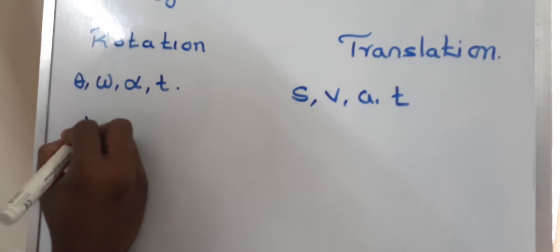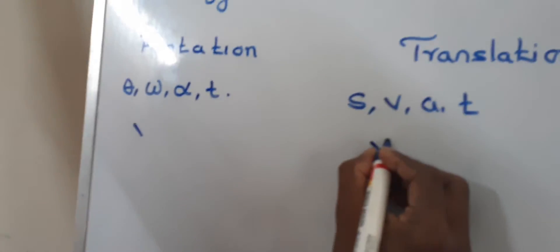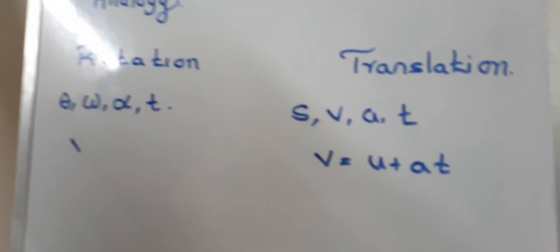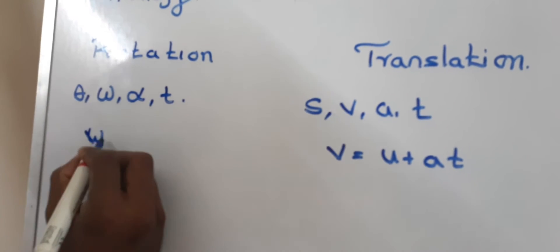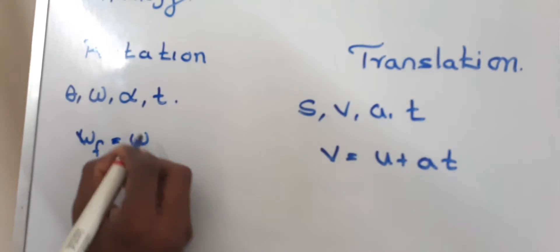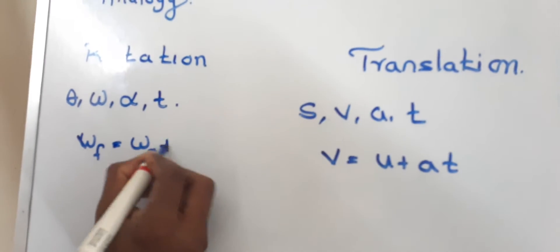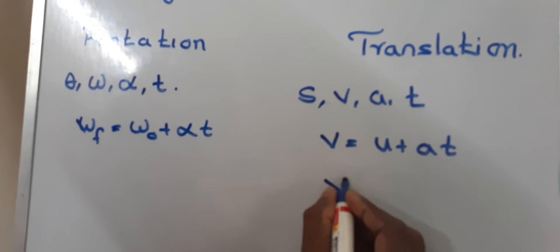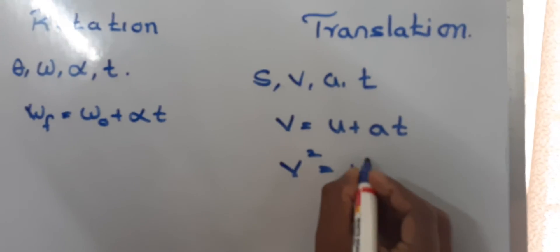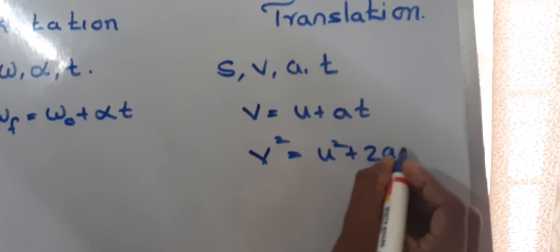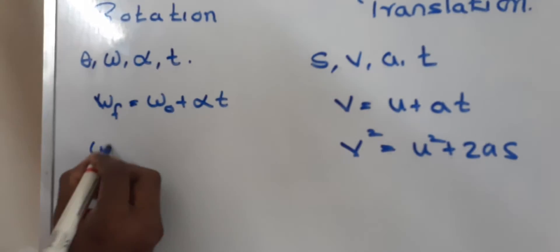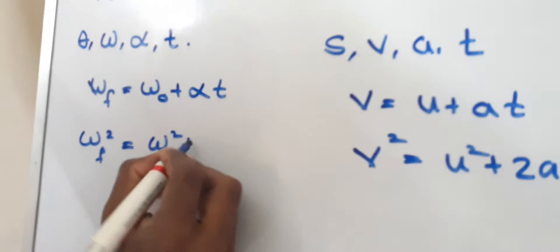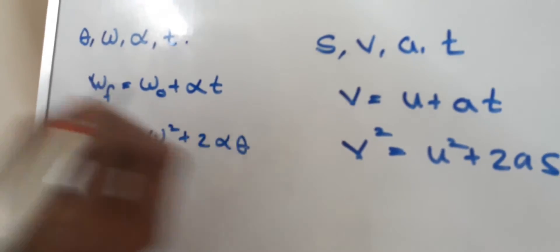Now using the kinematic equations: in translation, v equals u plus at; in rotation it becomes omega_final equals omega_initial plus alpha times t. And the relation v-squared equals u-squared plus 2as becomes omega_final-squared equals omega_naught-squared plus 2 alpha theta.